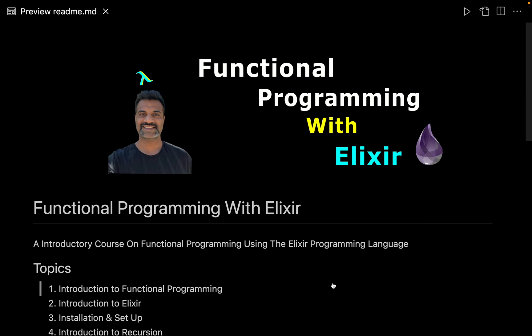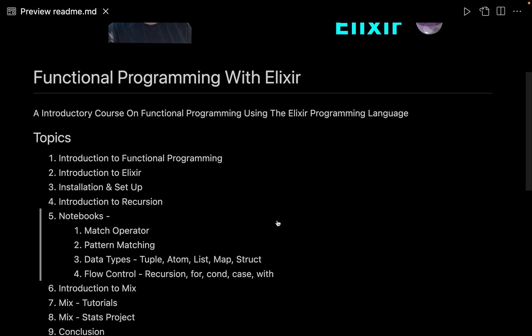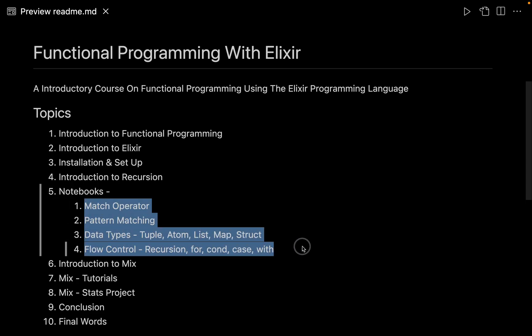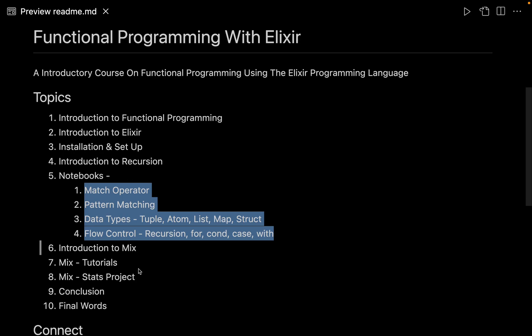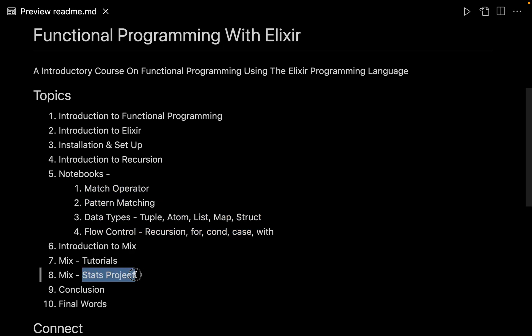Let us go through all of the topics that we will be covering inside this tutorial series. The first thing, as you can see, is that we are going to learn all of the basic fundamentals of functional programming. After that we are also going to learn all of the basics of Elixir, including the entire type system. Then we will see how to create projects by using mix — this is the basic tutorial project we are going to create. And as a last capstone project, we are going to create an actual statistics library that will help us in taking better business decisions, and this entire library will be made using Elixir.